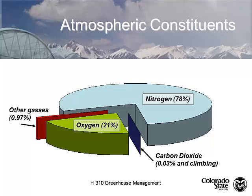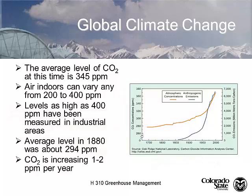In our atmospheric conditions, most of our atmosphere is nitrogen, 21% is oxygen, 0.03% is CO2, and 0.97% is the rest. This CO2 level is climbing — it's apparently anthropogenic. The average level of CO2 in our atmosphere today is considered to be 345 parts per million. Prior to the industrial age it was under 300 parts per million. In industrial areas we've observed as high as 400 parts per million, and it seems to be increasing about one to two parts per million per year.